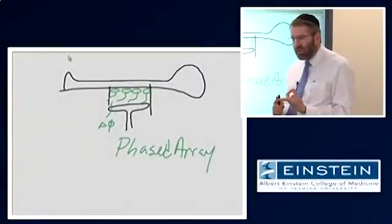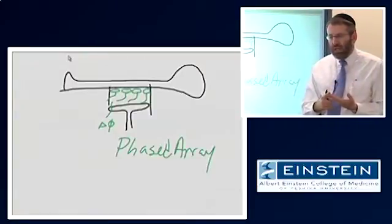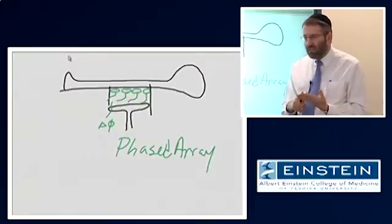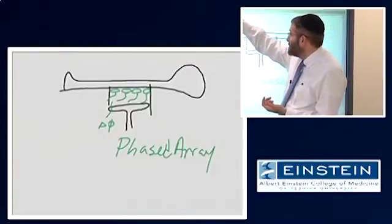Okay, so we've talked about the static magnetic field, about how to generate the RF to generate signal, and about how to receive that signal with a coil. So there are two more pieces that we need to talk about.